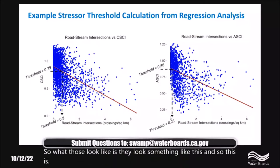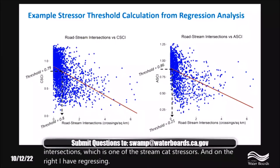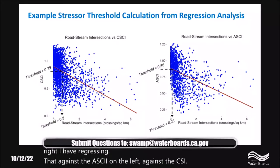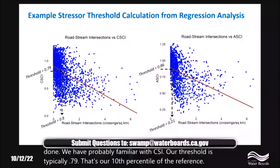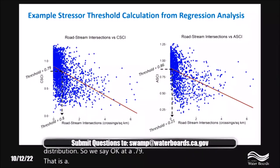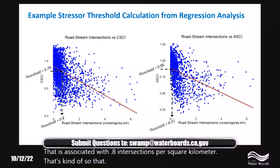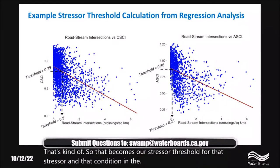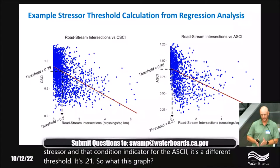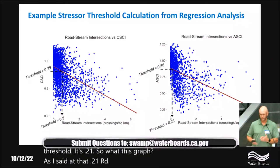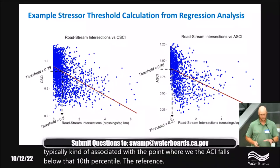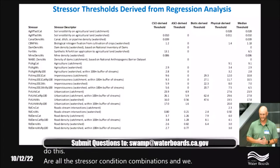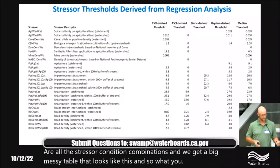As an example, we used road-stream intersections as one of the StreamCat stressors. Regressing that against ASCI on the right and CSCI on the left — the CSCI threshold is typically 0.79, the 10th percentile of the reference distribution. At 0.79, that corresponds to 0.8 intersections per square kilometer, which becomes our stressor threshold for that stressor and condition indicator. For ASCI, it's a different threshold of 0.21, meaning at 0.21 road intersections per square kilometer, the ASCI tends to fall below the 10th percentile of the reference distribution. Doing this for all stressor-condition combinations produces a large table where each major stressor has different threshold values for each condition indicator, with some blanks where there wasn't a good association.